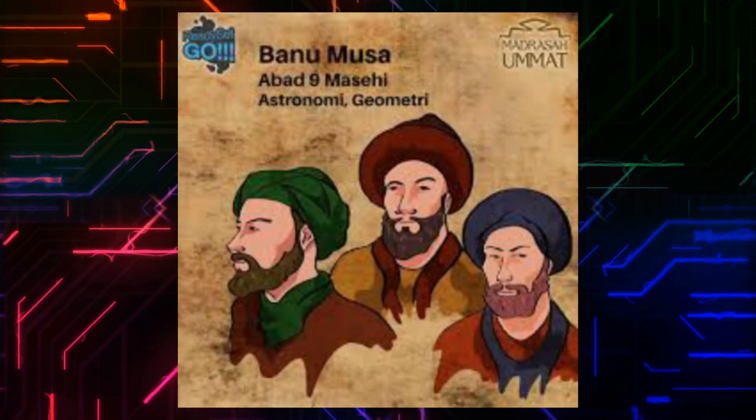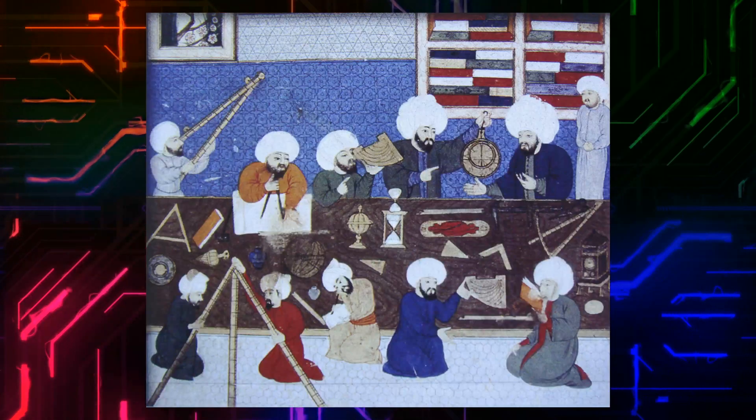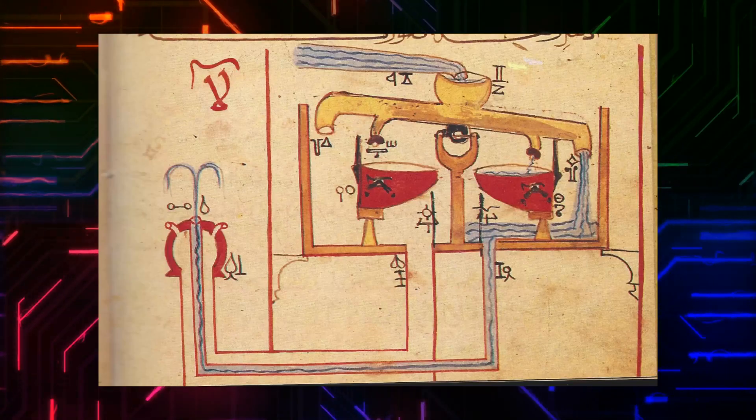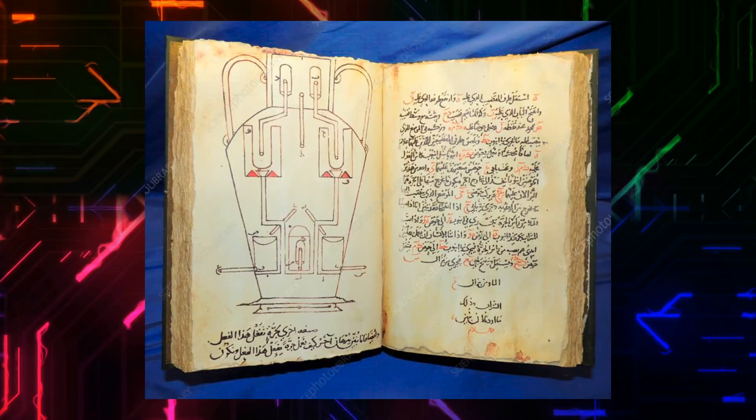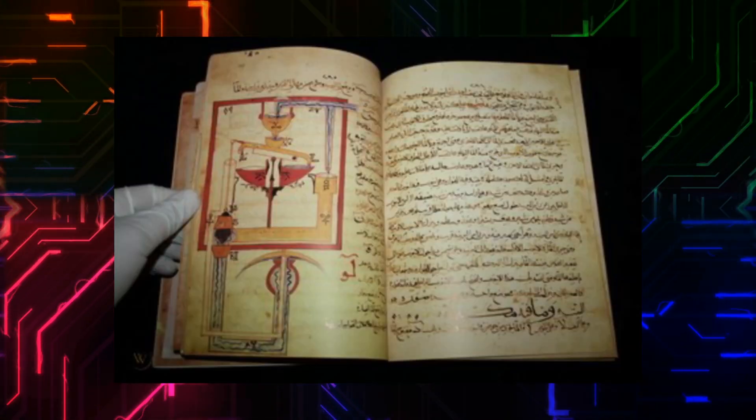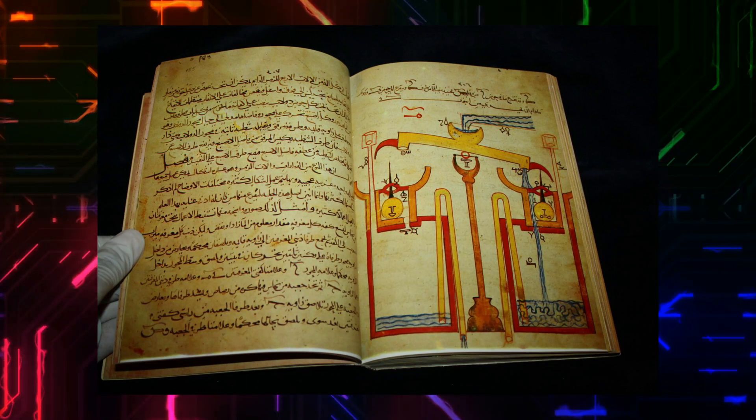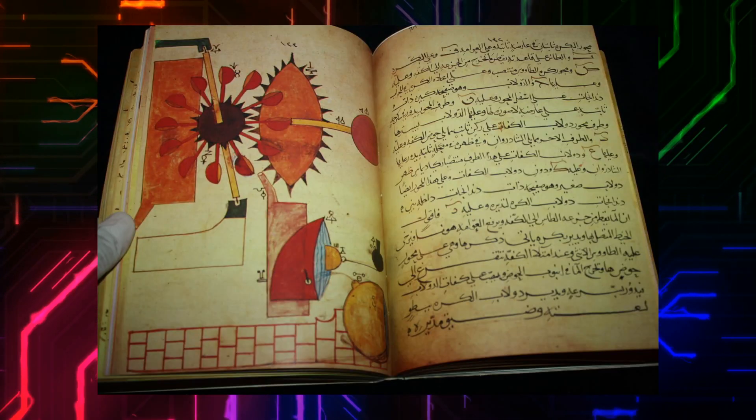The Persian Banu Musa brothers, in their Book of Ingenious Devices, 850 AD, described a number of automatic controls. Two-step level controls for fluids, a form of discontinuous variable structure controls, was developed by the Banu Musa brothers. They also described a feedback controller.